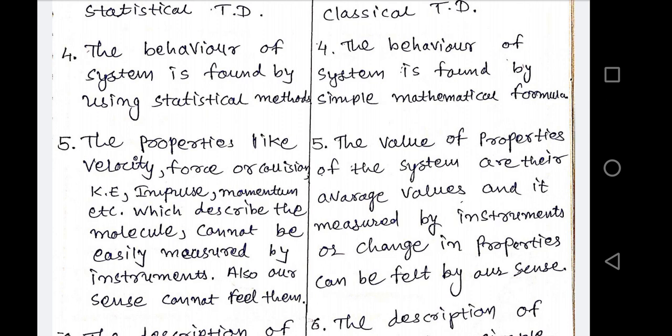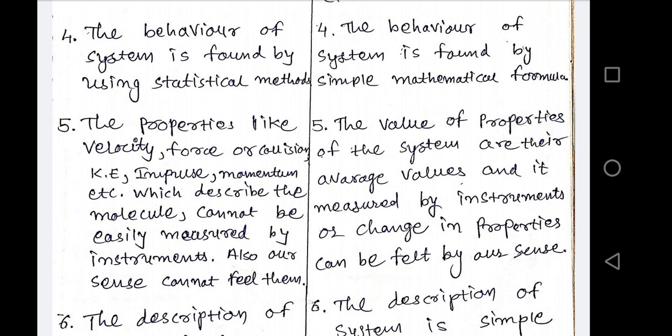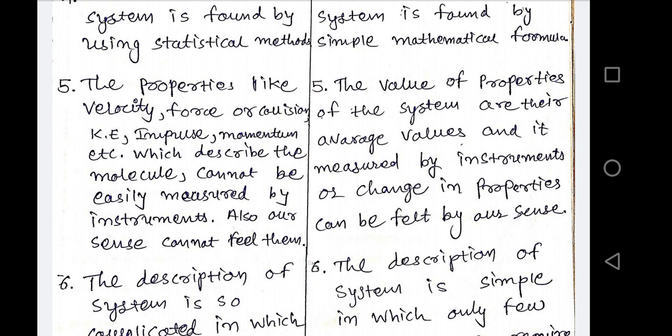Any property which is directly measured by any instrument is a macroscopic property. But properties such as kinetic energy, impulse, momentum, velocity, and force — which cannot be directly measured by any instrument — require calculating from other measurements to get their values. All these properties belong to the microscopic point of view.